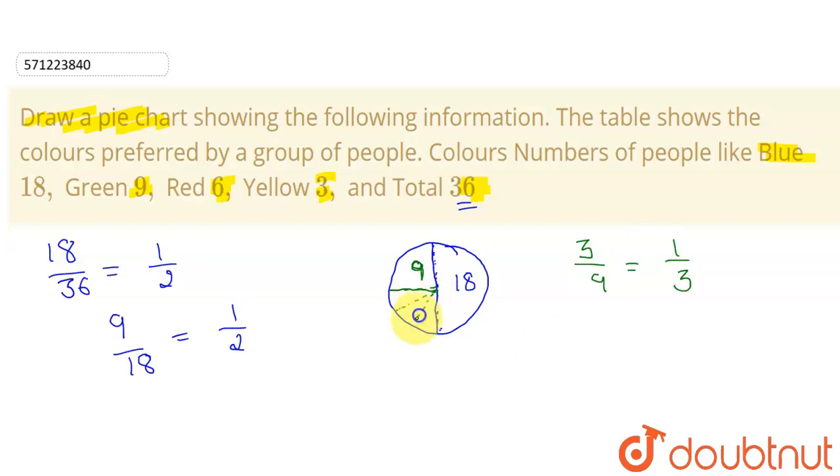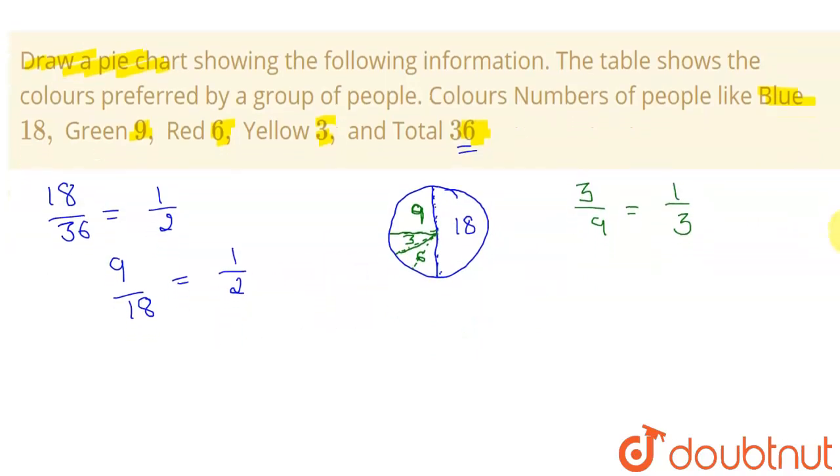Out of which this one third part will indicate this 3. So this is a rough sketch of my pie chart. So now I can draw my pie chart. I have drawn one for you.